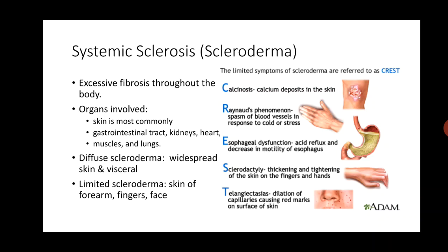Another common autoimmune disorder is systemic sclerosis, also known as scleroderma. Sclerosis means hardening, which is basically due to fibrosis, and mostly the skin is affected, hence the term scleroderma. In this disease there is extensive fibrosis throughout the body. Most commonly the skin, GI tract, kidney, heart, muscle and lungs are involved.